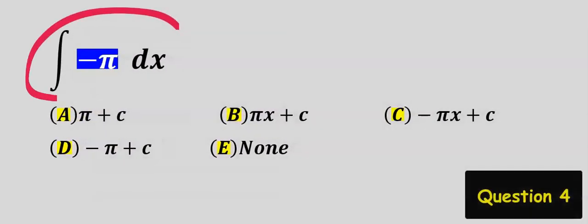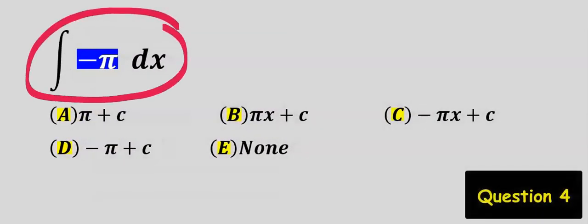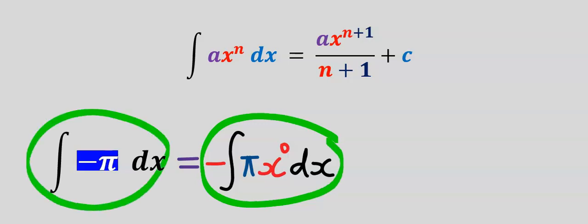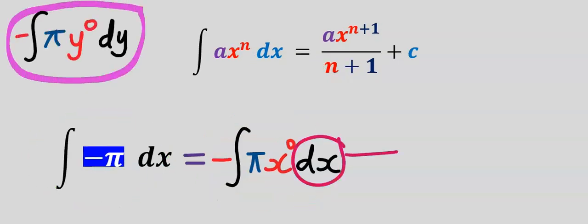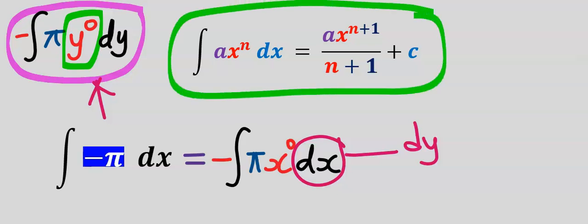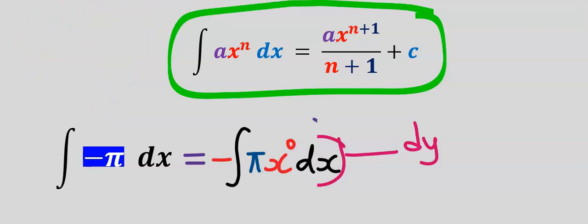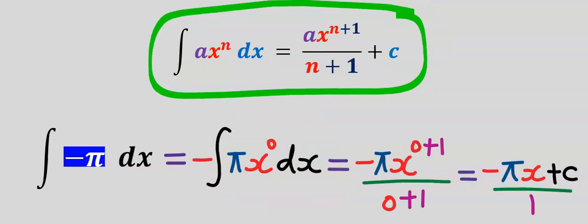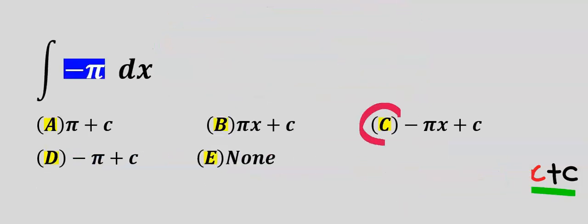Next, let's integrate this constant. I can rewrite this — if this were dy then we integrate with respect to y and add an increment to y. Still using the formula, we integrate and our answer is minus pi x plus c divided by one. We can remove the one and this is our answer. Our answer is c.